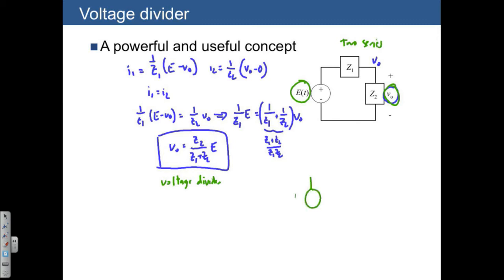So again, I'm just going to write this out again. We have two elements, Z1 and Z2. We're interested in this voltage. And any time you see this, you can immediately write VO is equal to Z2 divided by Z1 plus Z2 times quantity E.